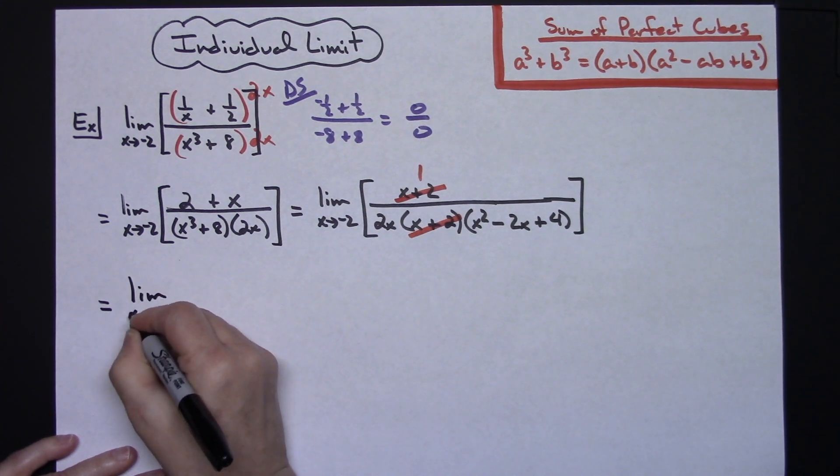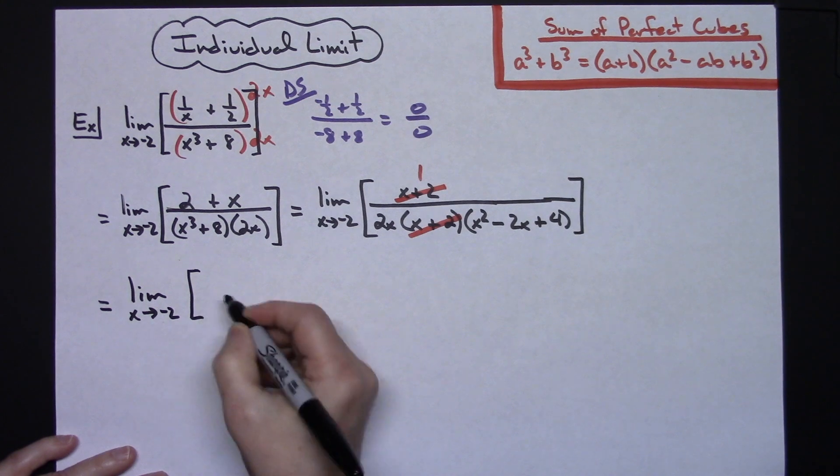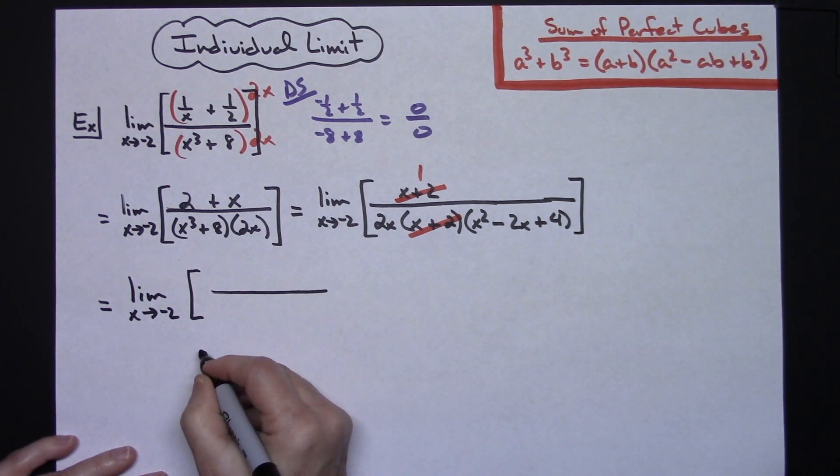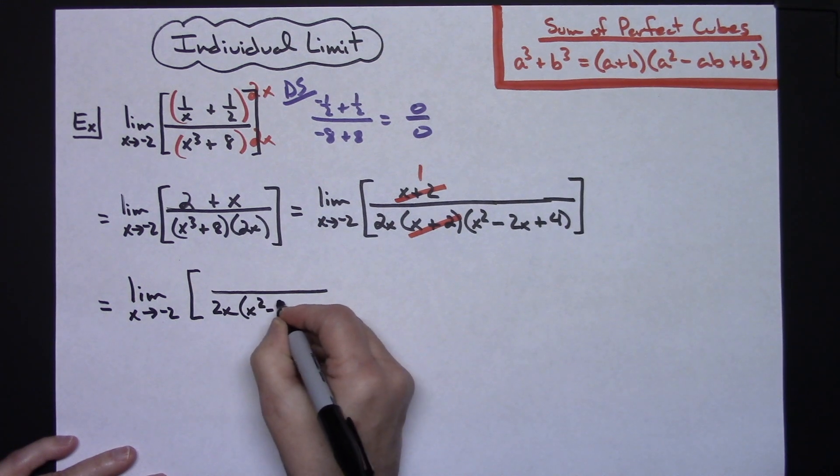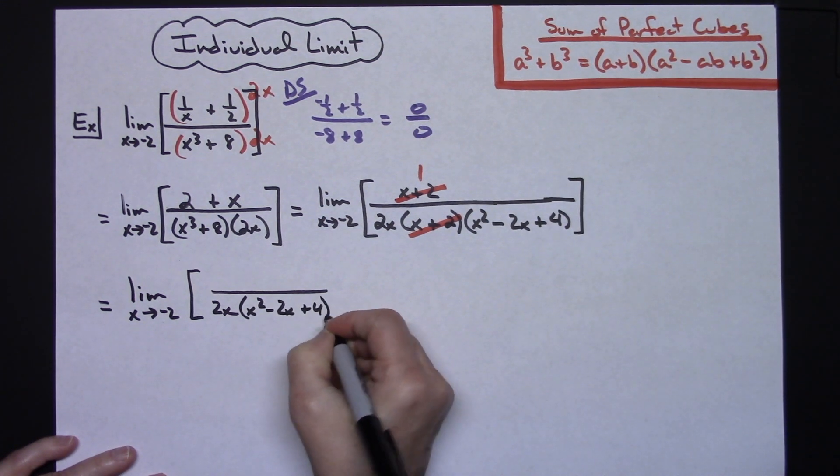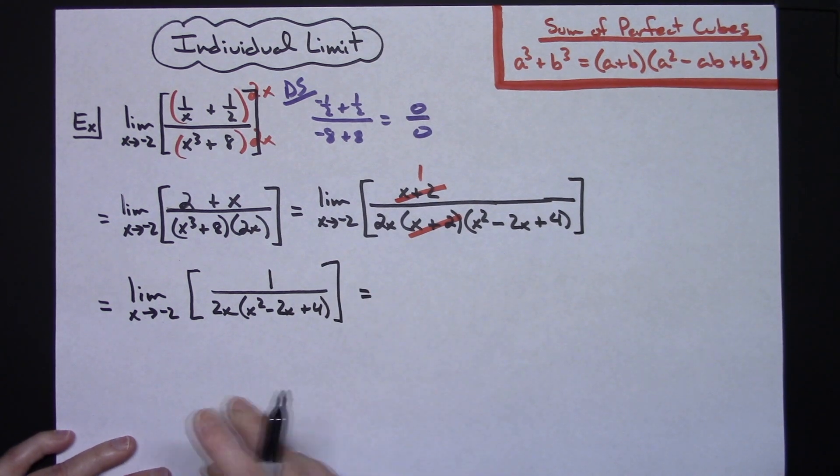I am going to rewrite that limit one more time just so we are clear at what we're looking at. We've got the limit as x approaches negative 2. In my denominator I'm going to have a 2x times that x squared minus the 2x plus the 4, and we've just got the 1 in the numerator.